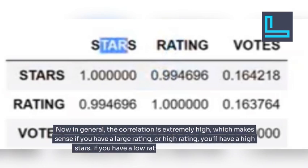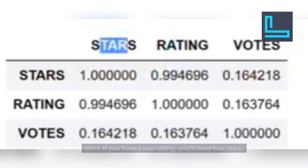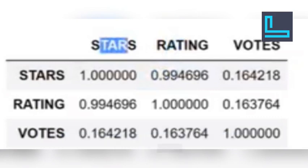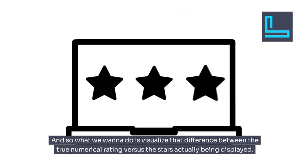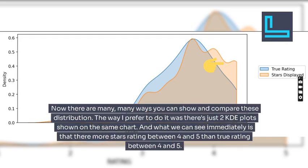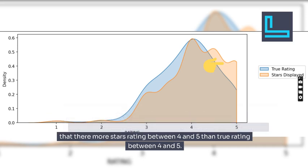In general the correlation is extremely high, which makes sense — a high rating corresponds to high stars and vice versa. But it's not perfectly correlated, meaning there is some difference between the stars shown to a user versus the true numerical rating. To visualize that difference, we use two KDE plots shown on the same chart. We can see immediately that there are more star ratings between 4 and 5 than true ratings between 4 and 5.